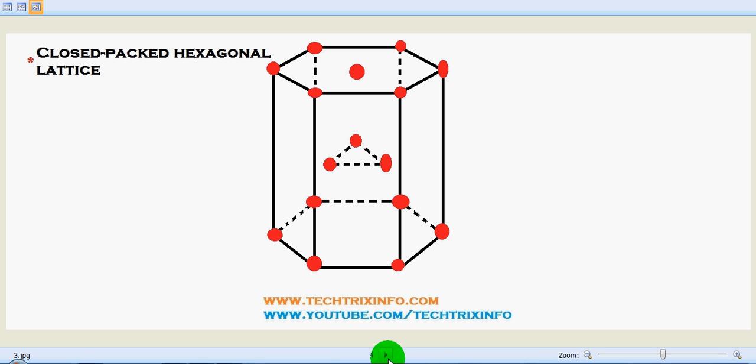The middle layer has three atoms in the form of a triangle as you can see over here. The least ductile metals like zinc and magnesium commonly have this type of structure.